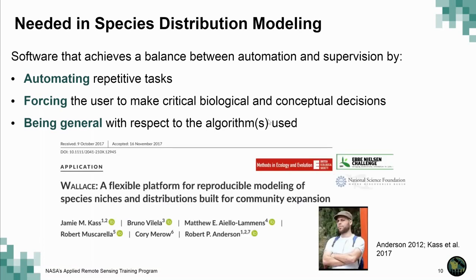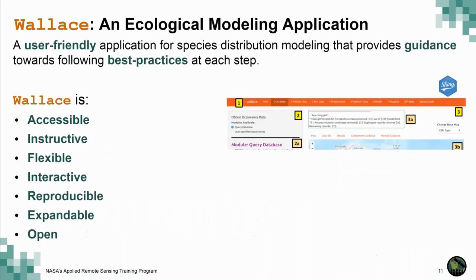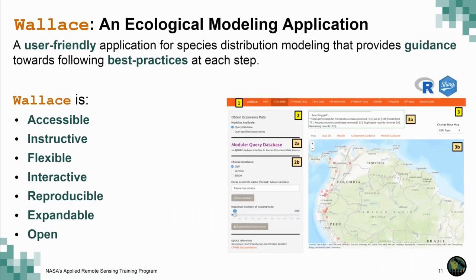This inspired our team, and very specifically Jamie Cass, to come up with Wallace. This is an R Shiny app, which means it has a graphic user interface that is very friendly and runs R in the background. A simple way of thinking about Wallace is that it's a user-friendly application for species distribution modeling that provides guidance towards following best practices at each step.